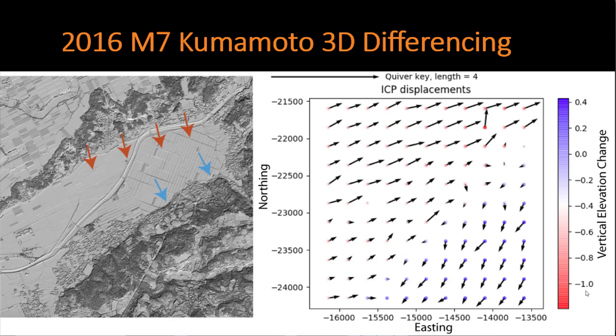On the right you see the 3D differencing results. Horizontal arrows show the horizontal displacements and the colors show the vertical displacements. In the bottom of this plot you see horizontal movement to the southwest as well as upward movement. There's then an abrupt change in arrow direction — the arrows suddenly go to the northeast and show downward movement. This is the location of one of the faults. The other fault is more cryptic, but there's a sharp change in amplitude or magnitude of the displacements to the northeast, which is the location of the second fault.